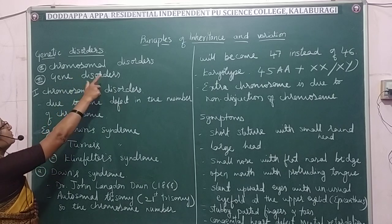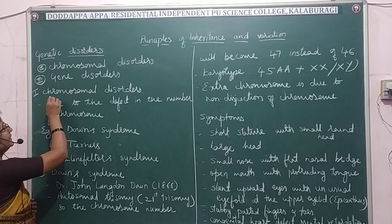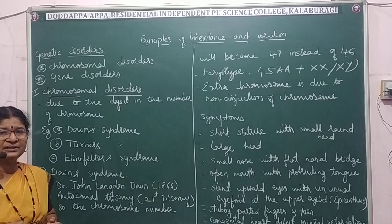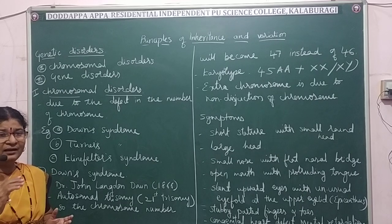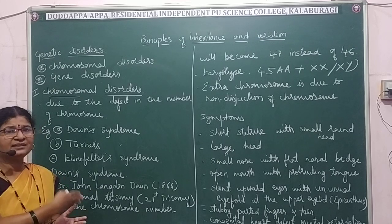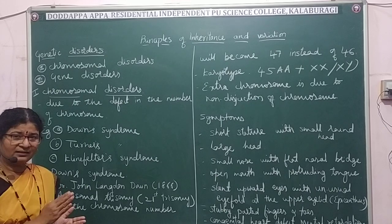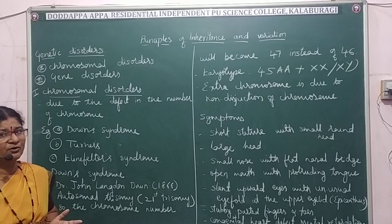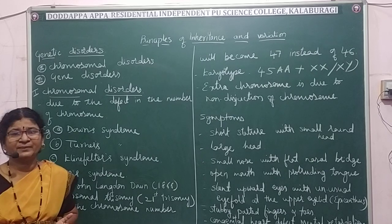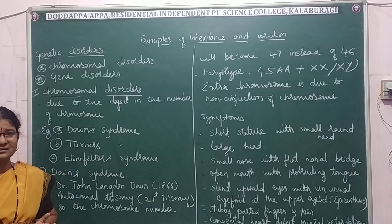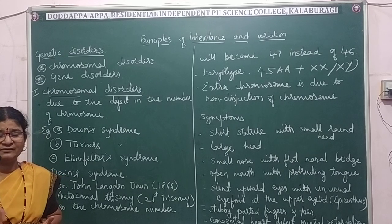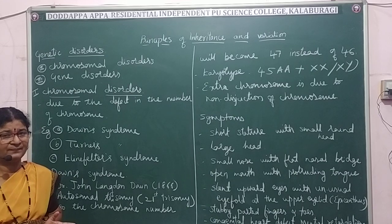In chromosomal disorders, the defect lies in the number of chromosomes. This is mainly due to the non-disjunction of chromosomes. In one gamete, an extra chromosome will go, and in another gamete, there is a deficiency. Due to this abnormality, the resulting zygote will develop into an individual with some abnormal characters, which may sometimes hinder normal survival.